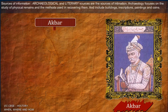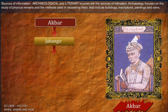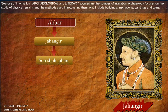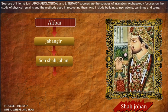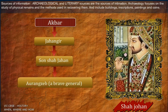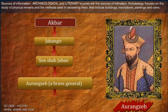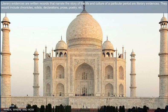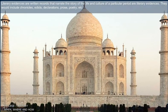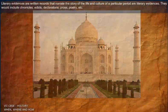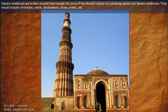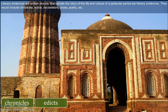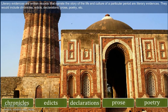Sources of information include archaeological and literary sources. Archaeology focuses on the study of physical remains and the methods used in recovering them, and includes buildings, inscriptions, paintings and coins. Literary evidences are written records that narrate the story of the life and culture of a particular period. They would include chronicles, edicts, declarations, prose, poetry, etc.